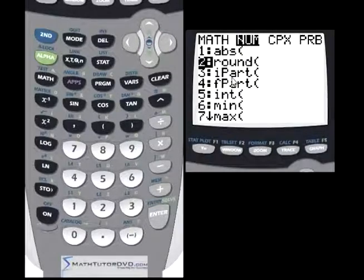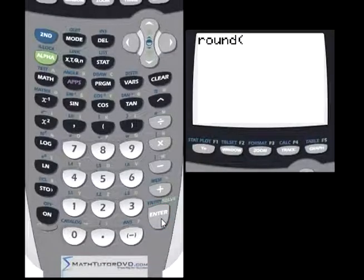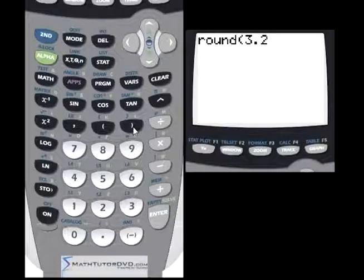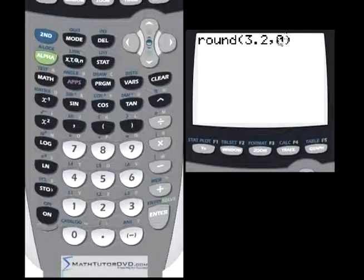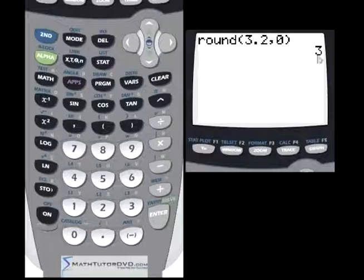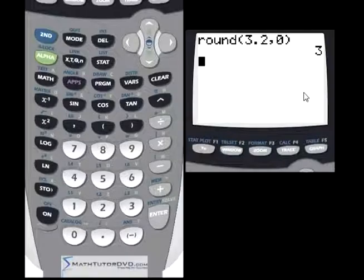Down below that we have a function for rounding. Everybody knows, most of you guys know how to round numbers already. If you put a number like 3.2 in there and you want to round it to the nearest decimal, then you have to tell it how many decimal points you want to round to. So we're rounding to zero decimal points. So basically when we do that, it's going to return the number three because we're rounding to the nearest whole number. And of course, 3.2 rounds down to three.